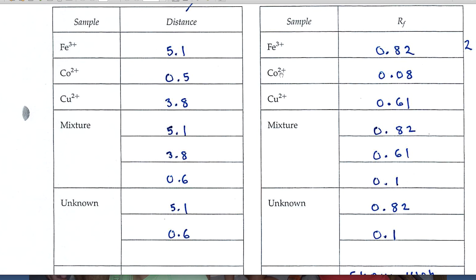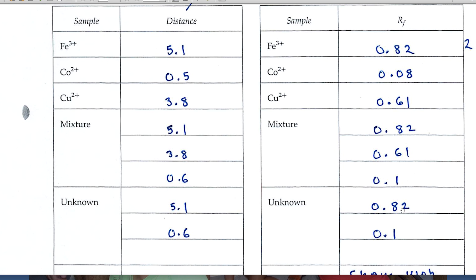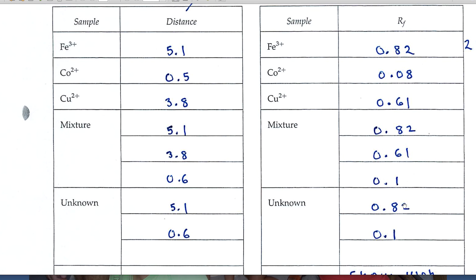Down below, here are two values now for the unknown. Two ions are present. 0.82, my unknown must have iron in it, the Fe3+ 0.1, my unknown must have the cobalt ion.